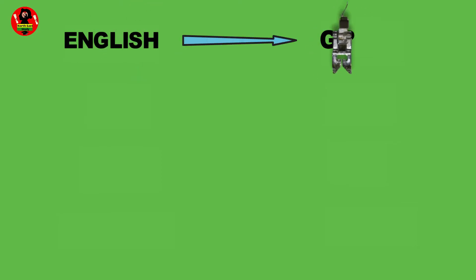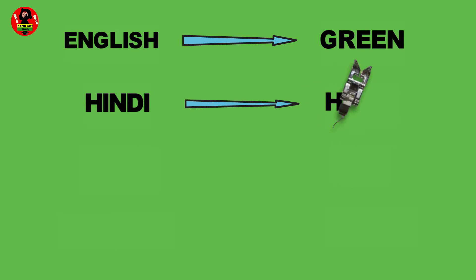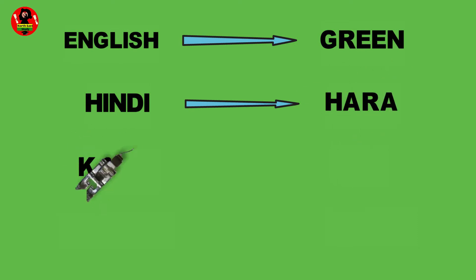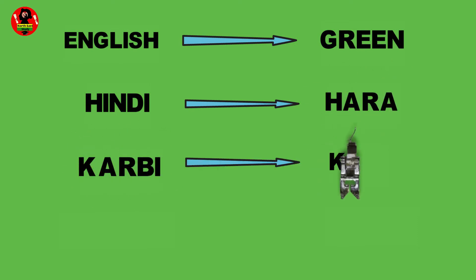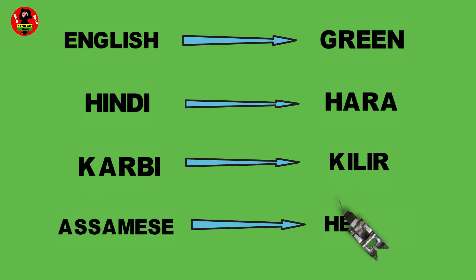English: Green. Hindi: Harah. Karbi: Kilir. Assamese: Hewjiah.